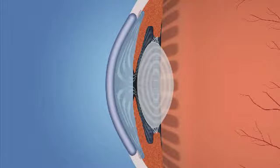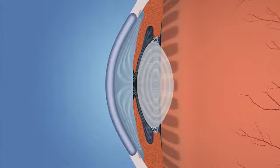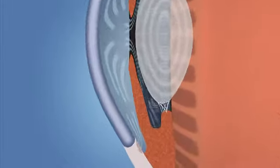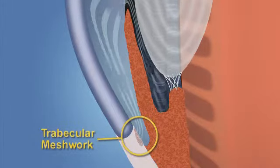To maintain a constant healthy eye pressure, your eye continually produces a small amount of aqueous humor, and an equal amount of this fluid flows out of the eye through a microscopic drain called the trabecular meshwork in the drainage angle.